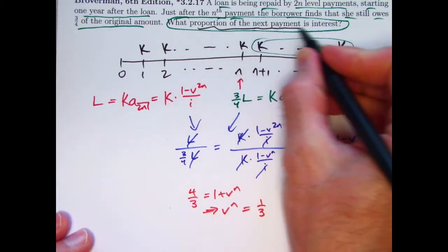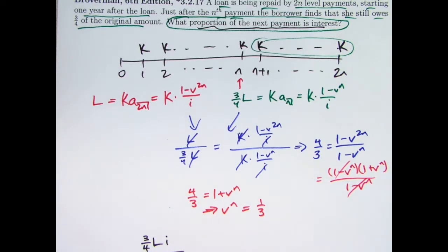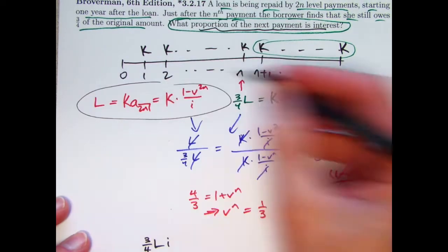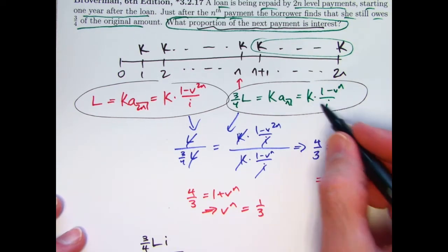What proportion of the next payment at time N+1 goes toward interest? Well, it would be the interest on the balance at time N, which is three-fourths L times i, the interest rate, divided by the total payment, which is K. I can use either one of these equations to solve for K. Let's go ahead and use that equation to solve for K.